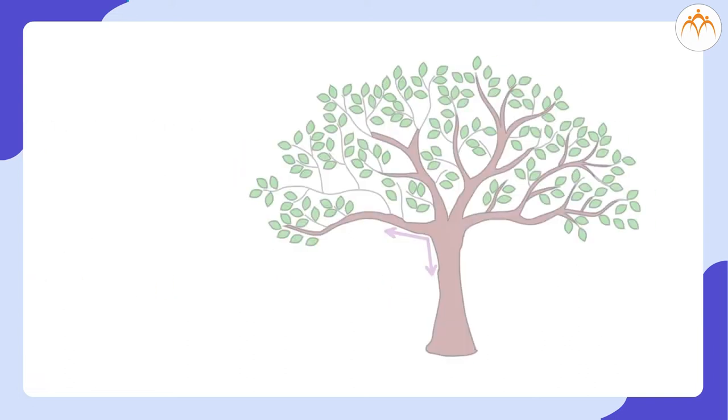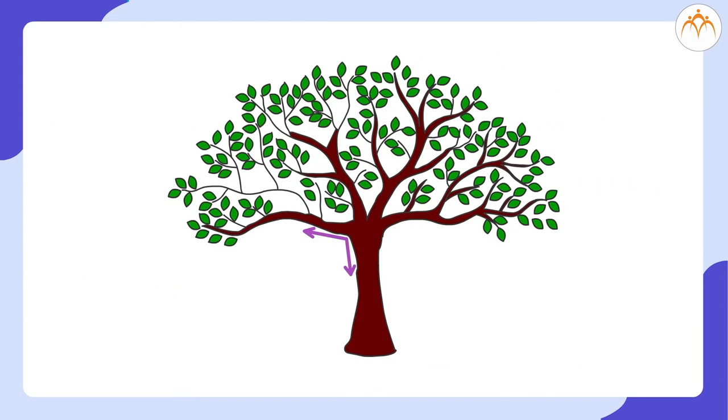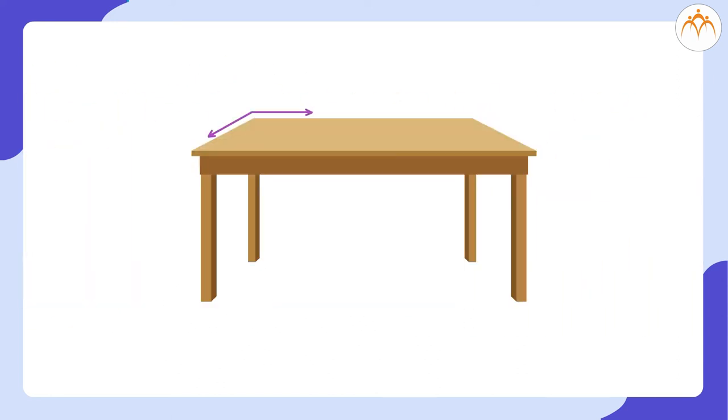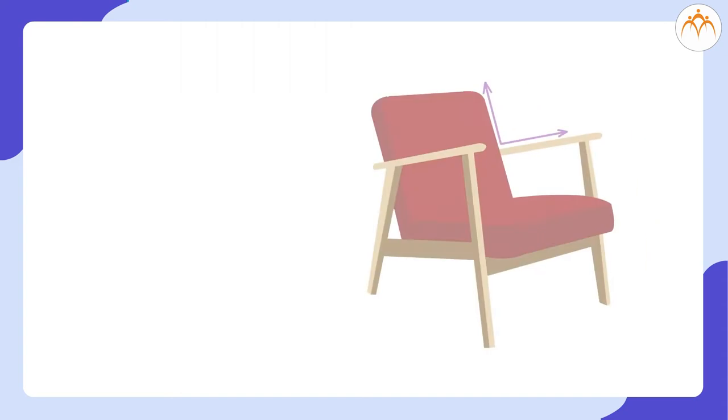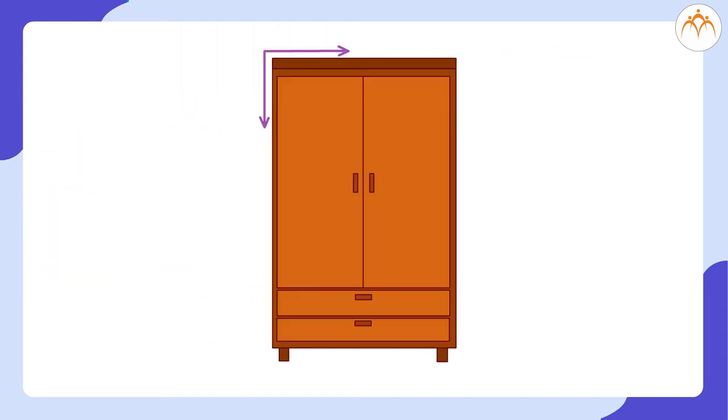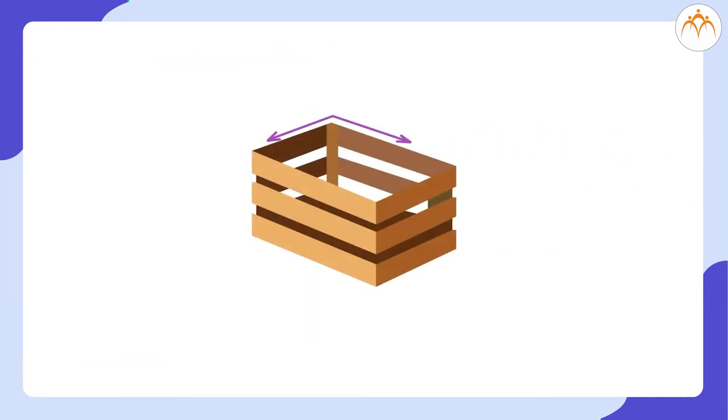We also see angles between the trunk and the branches of a tree, corners of a wall, corners of a table, between armrest and seat of a chair, corners of a cupboard, corners of baskets, etc.